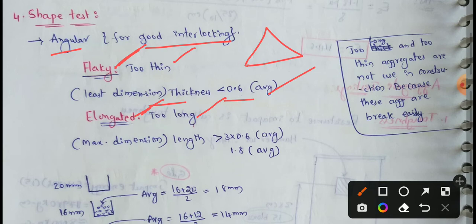The flakiness index test is applicable to aggregate sizes larger than 6.3 mm.